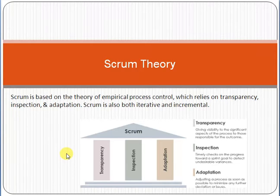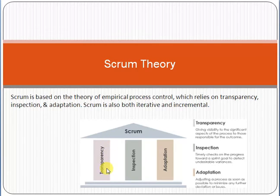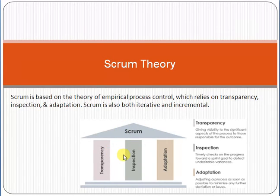Scrum theory says that scrum is based on the theory of empirical process control, which relies on transparency, inspection, and adaptation. The scrum framework or building is based on three pillars: transparency, inspection, and adaptation. Remember — the whole scrum framework is built on these three pillars.